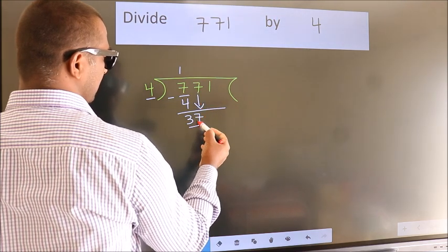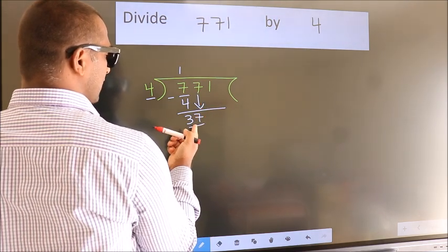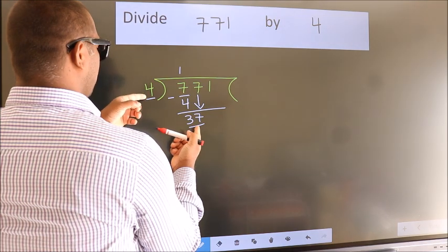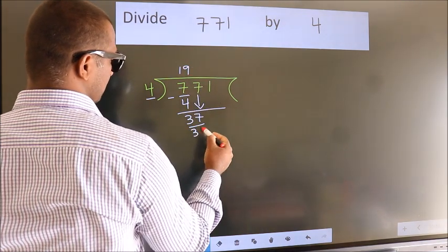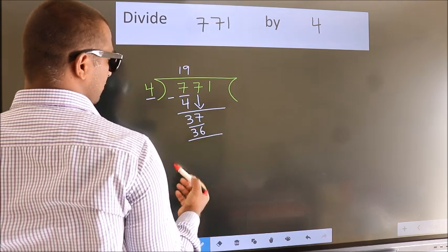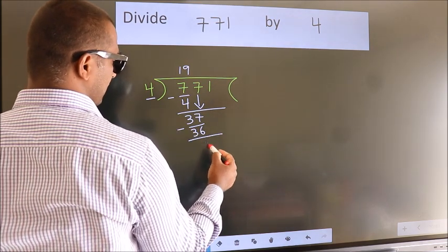So 37. A number close to 37 in the four table is 4 nines, 36. Now we subtract and get 1.